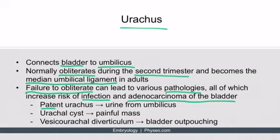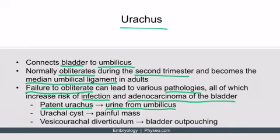The first type is a patent urachus — if the urachus is patent, then the bladder can expel urine from the umbilicus, increasing the risk of infection. There is also an increased risk of adenocarcinoma. Another pathology is a urachal cyst, which in addition to being a nidus for infection and cancer, is also a painful mass. Lastly, there is a vesicourachal diverticulum, which is simply the bladder outpouching.